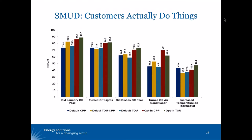The record shows that when customers are on time of use rates, they actually change their behavior, which changes their energy consumption. This slide shows an example from one utility, Sacramento Municipal Utility District, of some of the things that customers actually do under different rate designs. You see five different actions that customers potentially took, and under each action, the percentage of customers that took that action under five different rate designs.